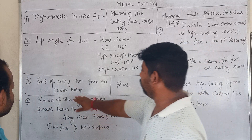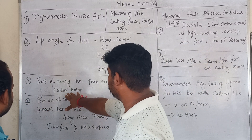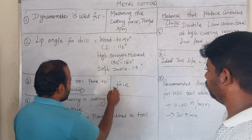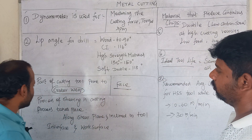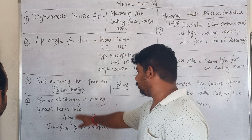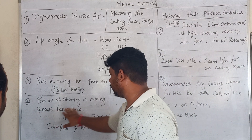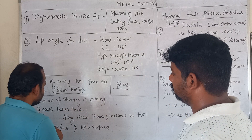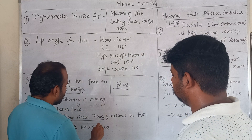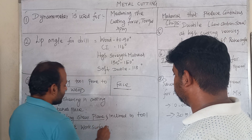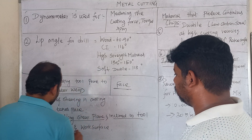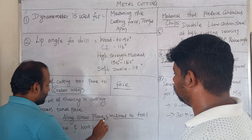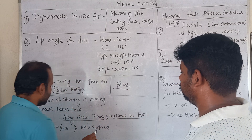The part of the cutting tool prone to crater wear is the tool face. Crater wear is created during the cutting process. The process of shearing and cutting takes place along the shear plane, which is inclined to the tool interface and surface.